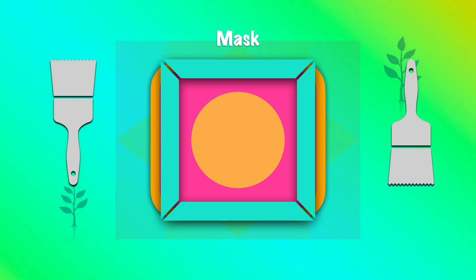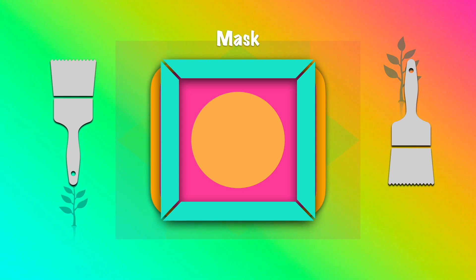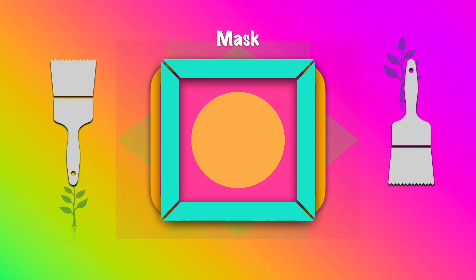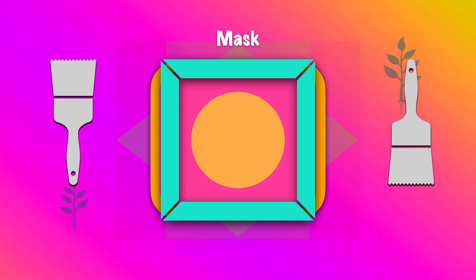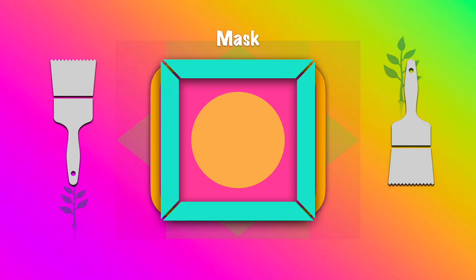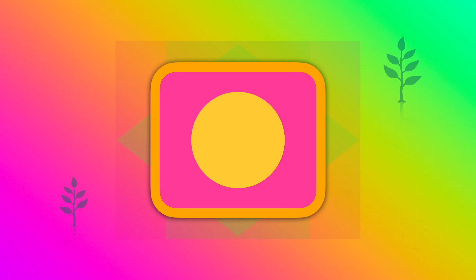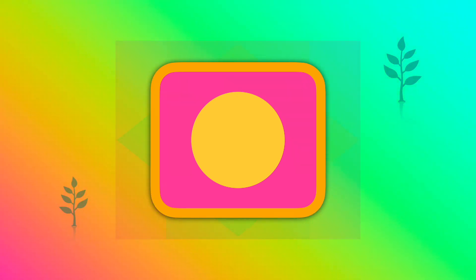It's important to remember we're only painting on the mask — the circle underneath is unaffected. We're only changing the properties of the mask, making it more or less revealing depending on the color of paint we apply. Let's remove the mask, and there's the circle, untouched.